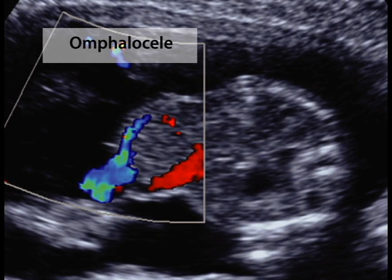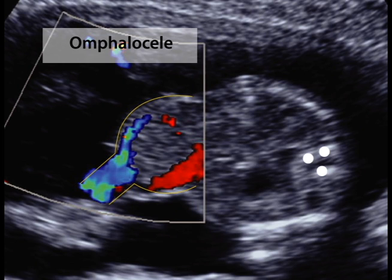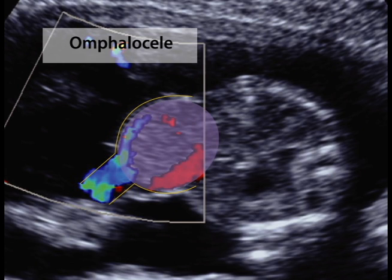In contrast, fetal omphalocele is a herniation of abdominal organs into the base of the umbilical cord itself. In this image, the fetal stomach, spinal ossification centers, and ribs help with orientation of the abdominal circumference, as the contour is distorted by herniation of the fetal liver into the base of the cord.